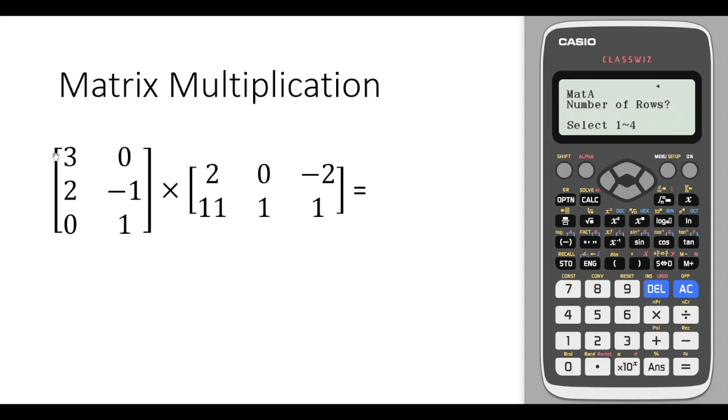Now the number of rows for the first matrix is three. I press three and the number of columns is two. Select two and now we enter the value of each element of the first matrix: three, zero, two, minus one, zero, and one.